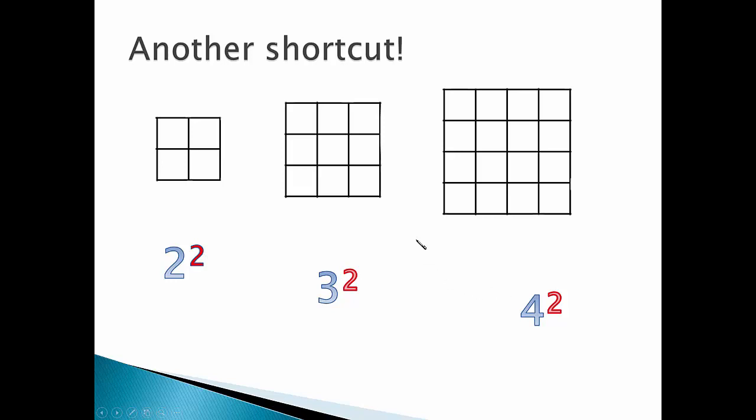Here's the tricky part. Where's the 2 in these pictures? Where's the operation? There's no plus, no times sign. The 2 stands for the idea of two dimensions, a square. We have to figure out how many squares by multiplying 3 times 3, 4 times 4.